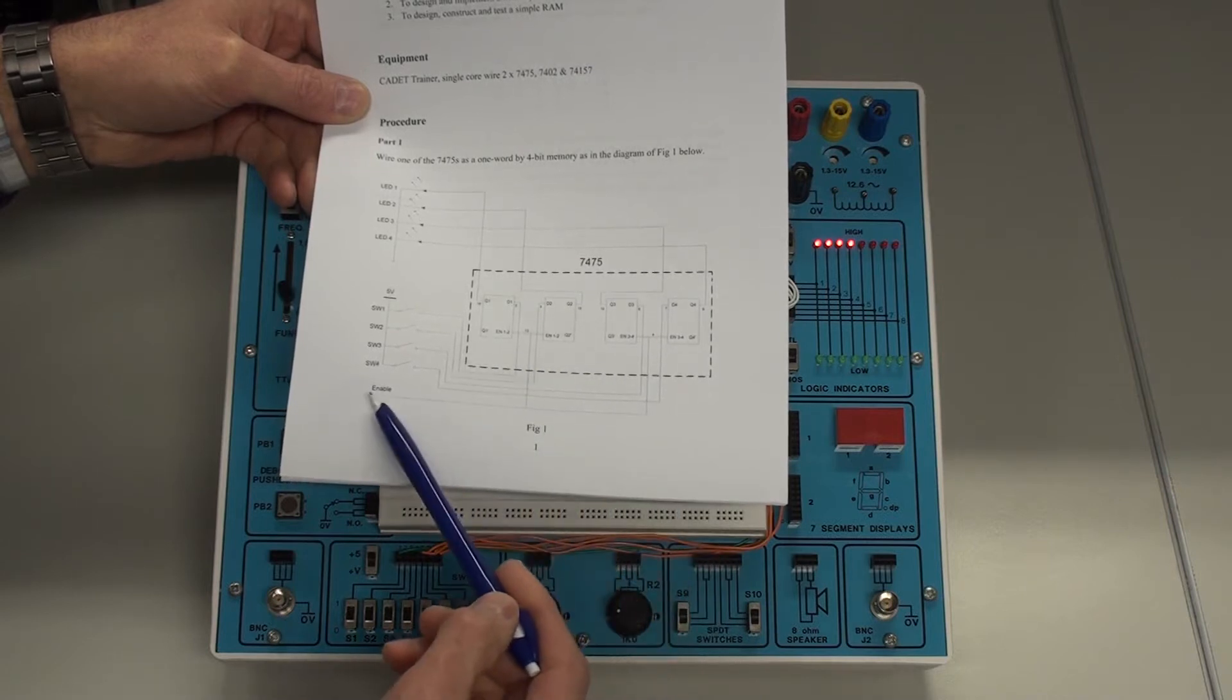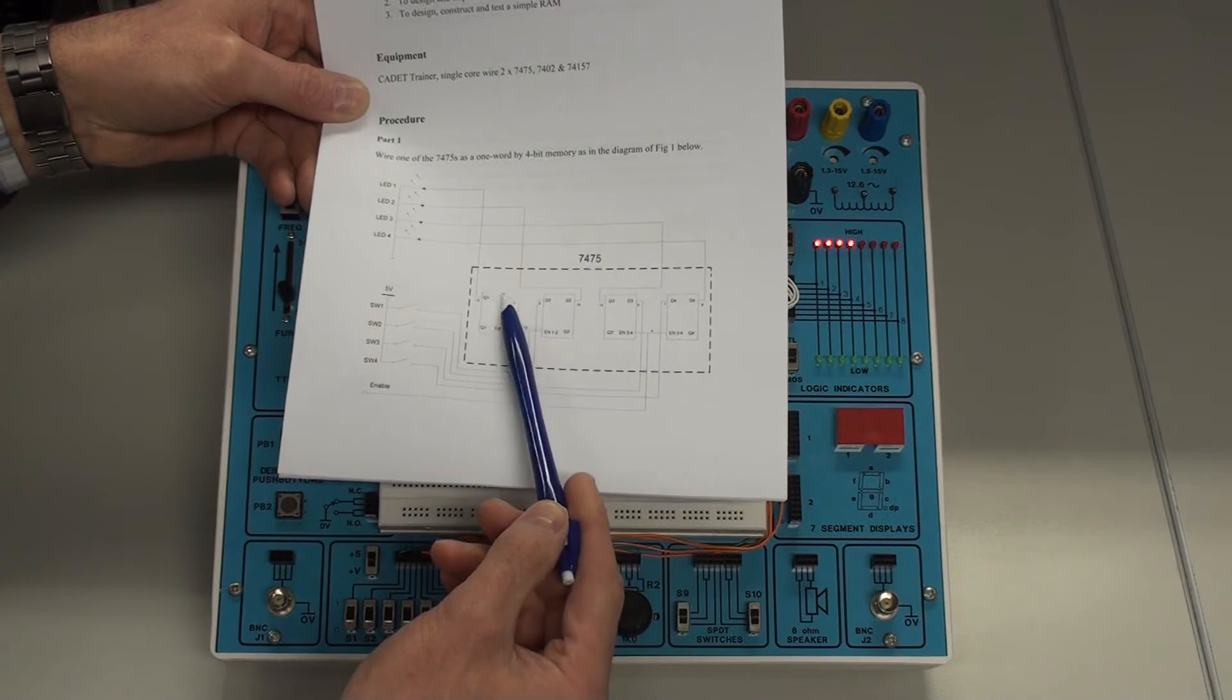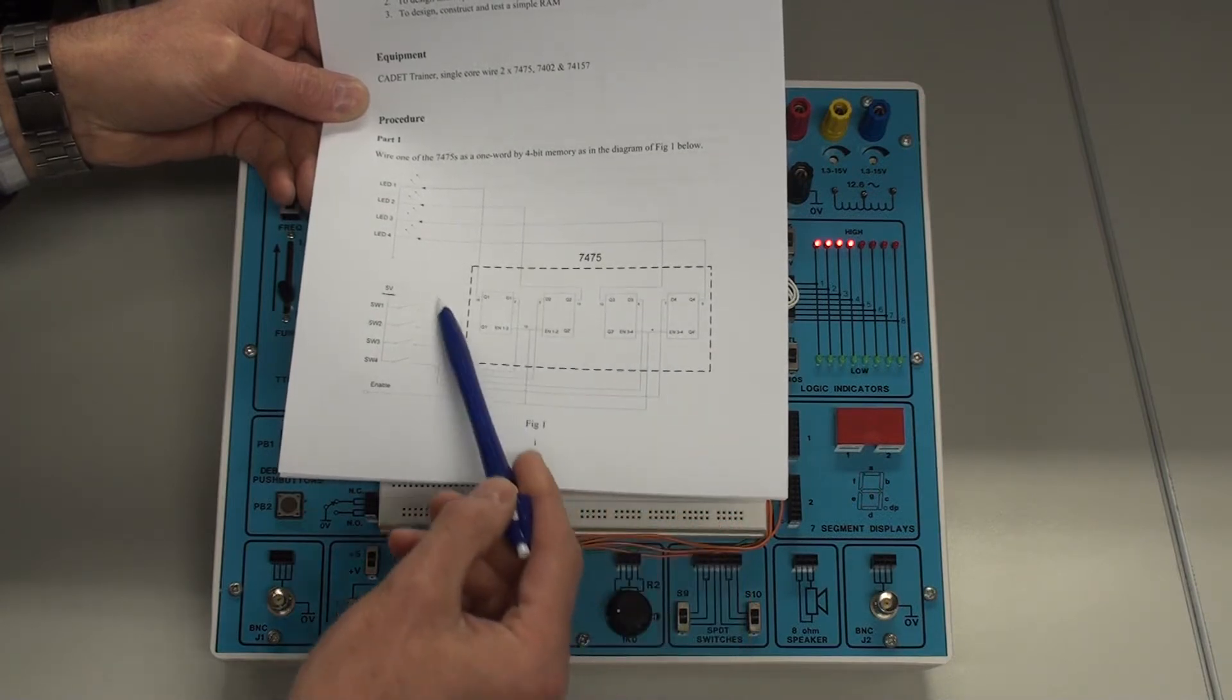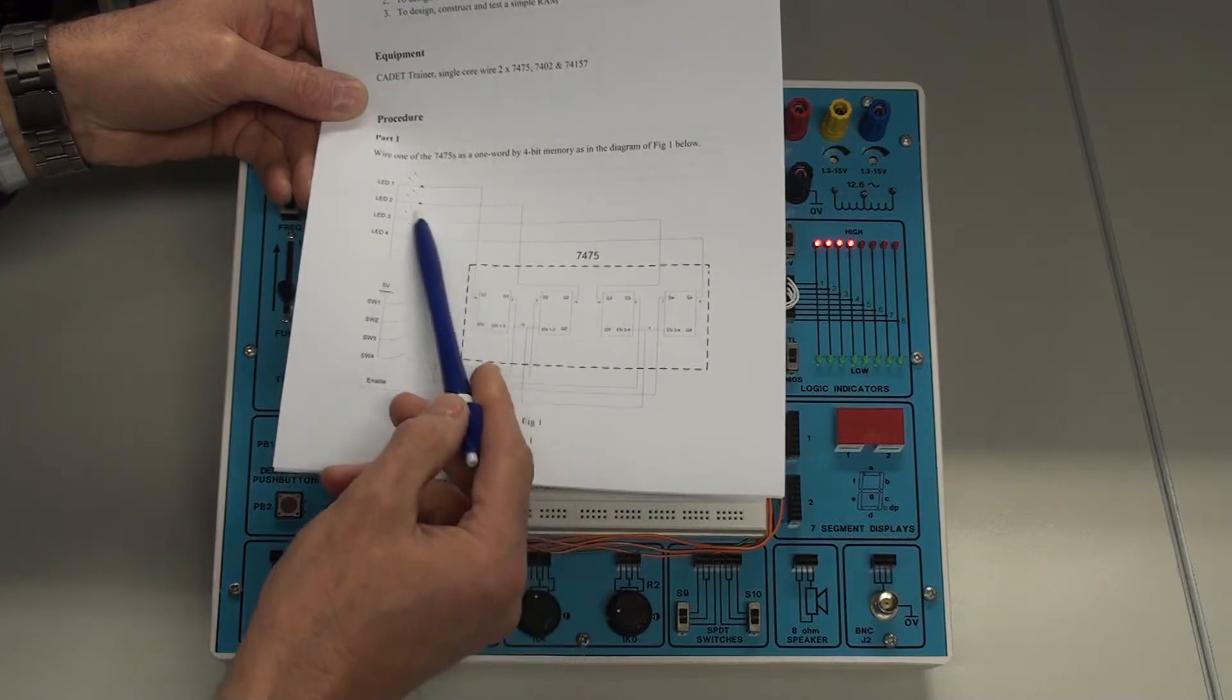Then when we set enable to low, the information is stored within the latch. So regardless of any changes on the switches here, the output remains the same.